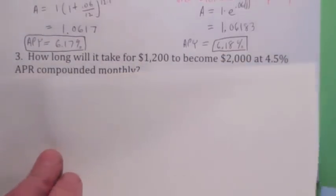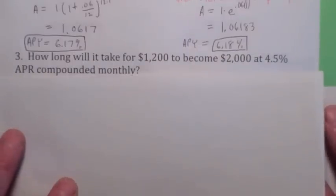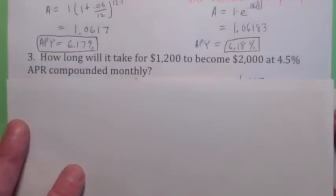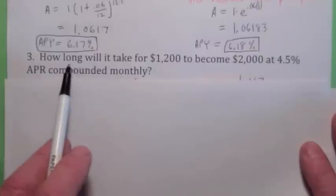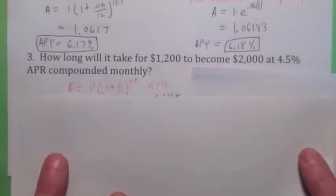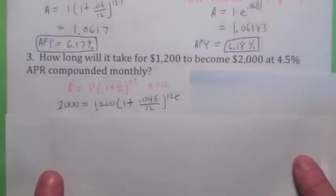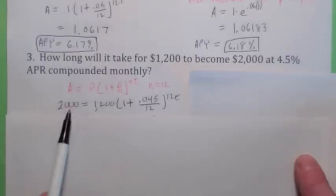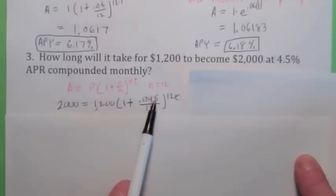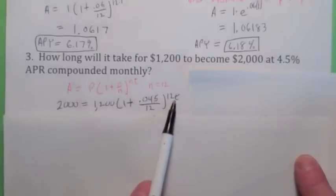The question here is, how long will it take for $1,200 to become $2,000 at 4.5% APR compounded monthly? So they're giving us the percentage rate. They're giving us the initial amount and the final amount. And the question is, how long? So the question is, they're asking us how many years, right? Well, write down the formula. It's compounded monthly, so we use this with N equals 12. When you plug everything in, A is 2,000, P is 1,200, R becomes .045, and N is 12, so you get this. And we're going to solve this equation for T.